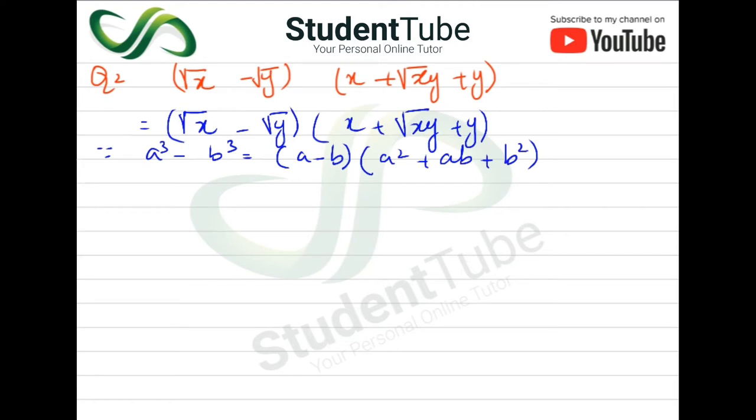Now we have to write x and y in this formula. So this will be something like this: square root x is our a, so here we have a cubed, and then minus, then square root y is b.